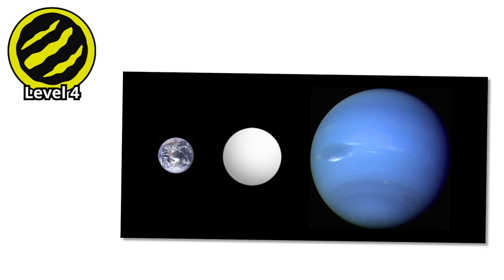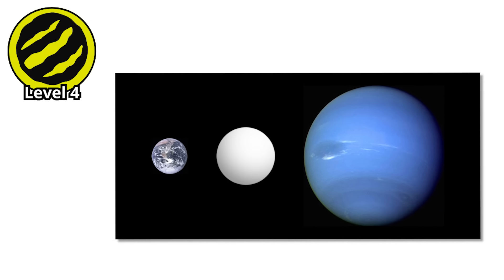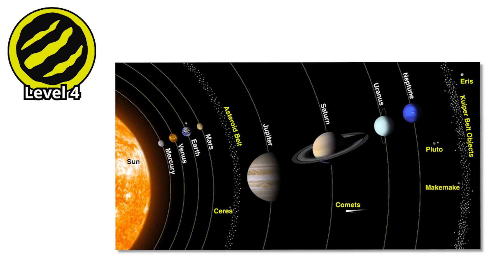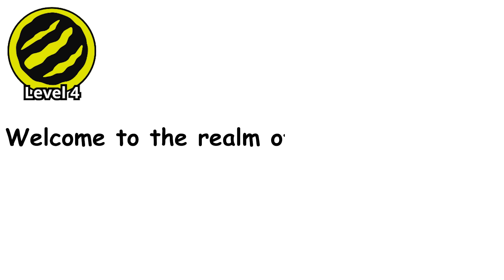Super Earths are massive, but they're still just rocky planets. What happens when you scale up even further? When a planet gets so big it almost becomes something else entirely? Welcome to the realm of the failed stars.